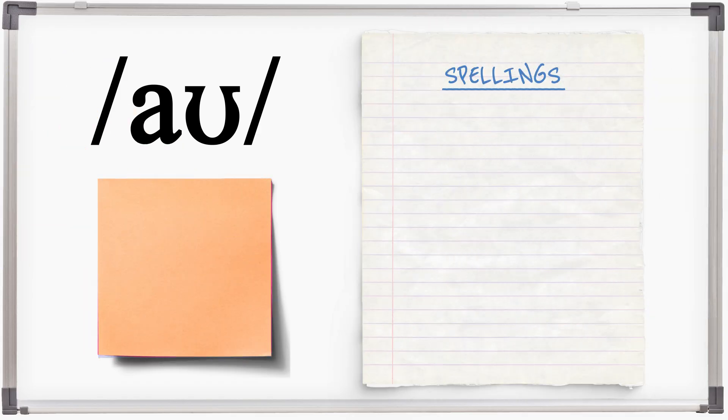AU is spelt OU or OW. Found, noun, cloud, lout, now, town, owl, browse.